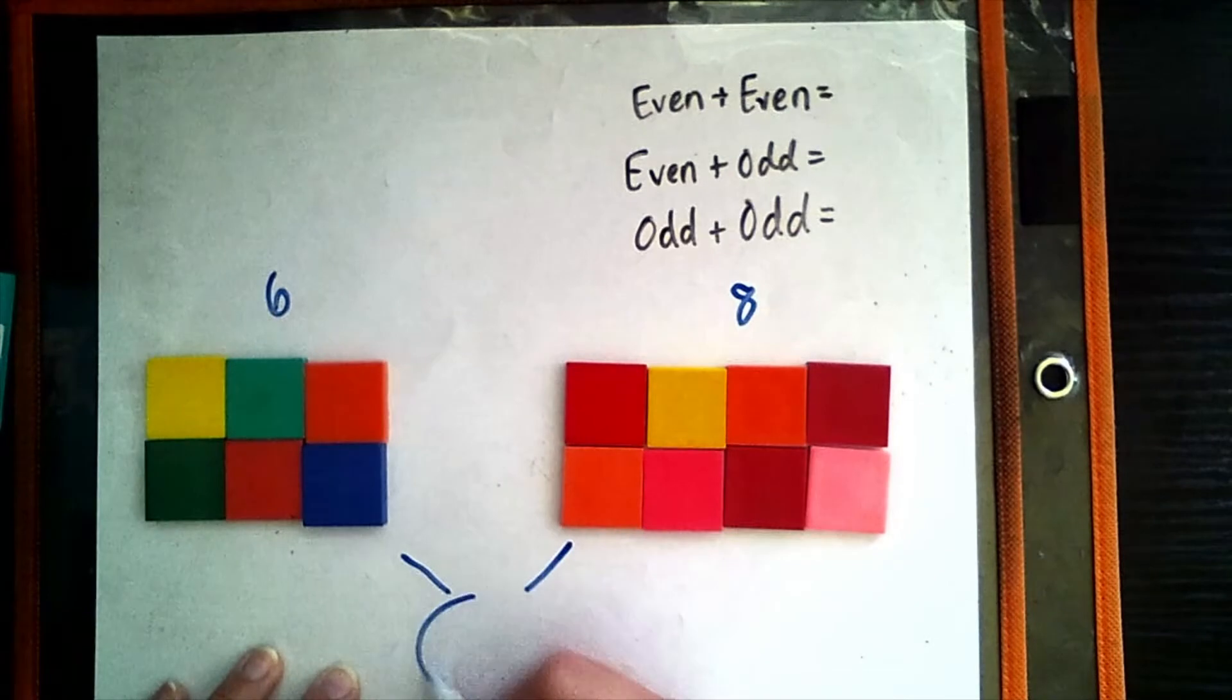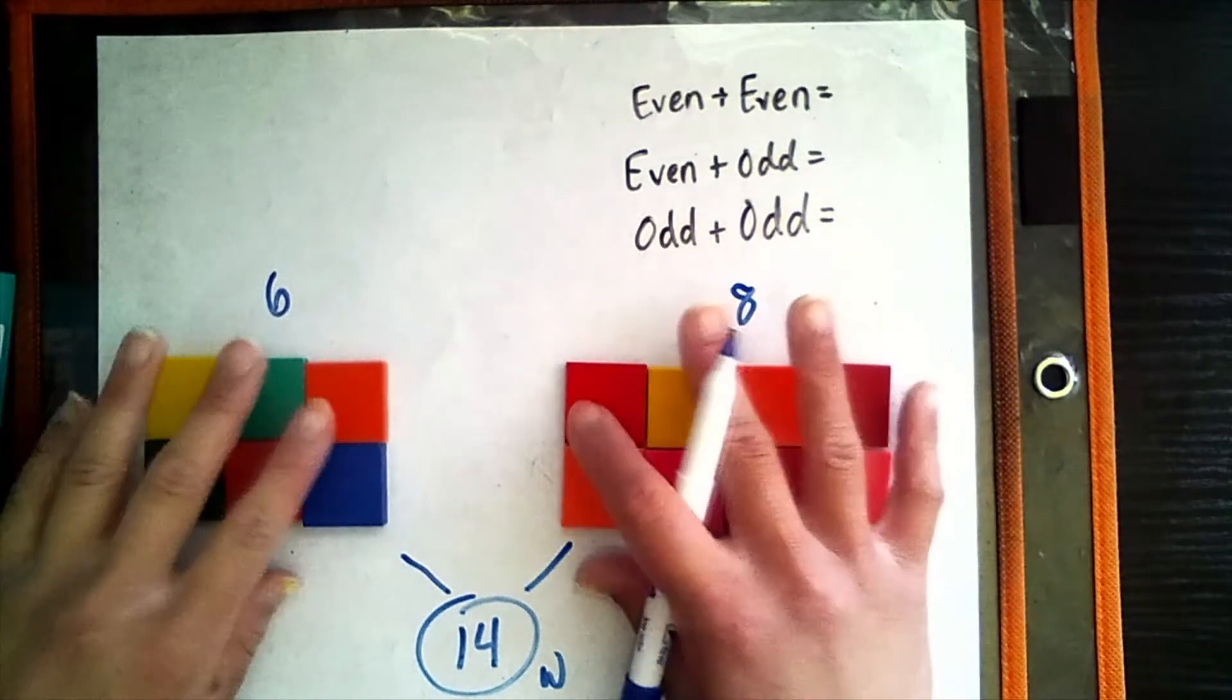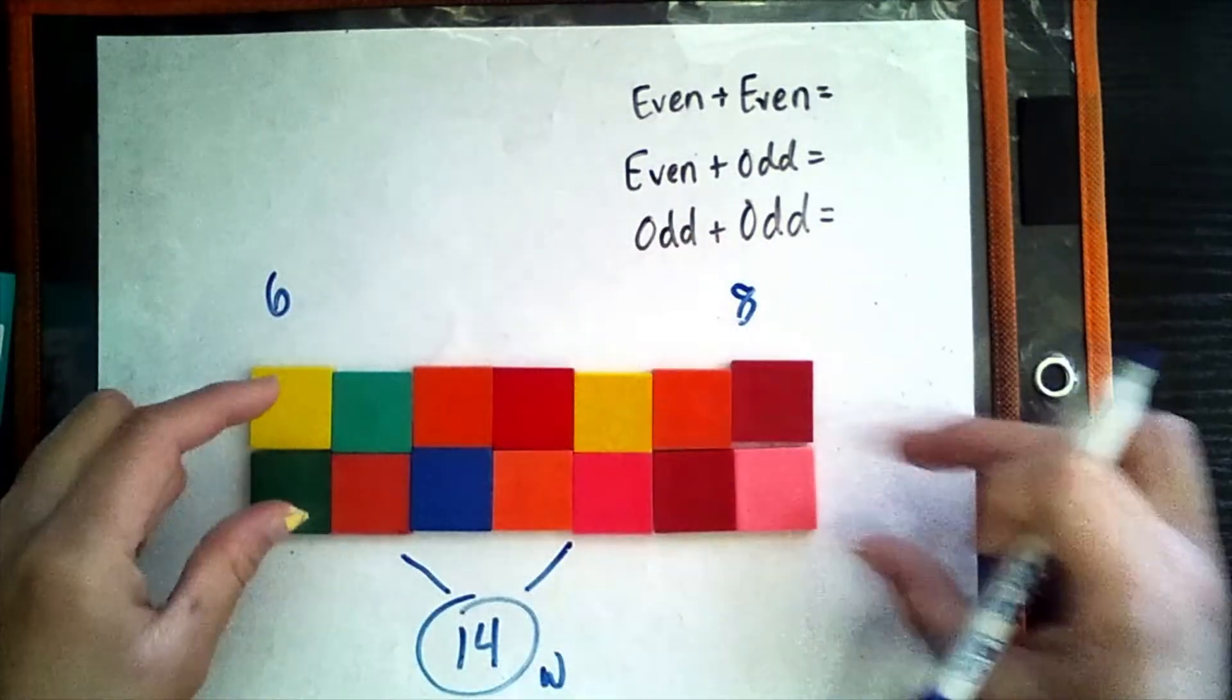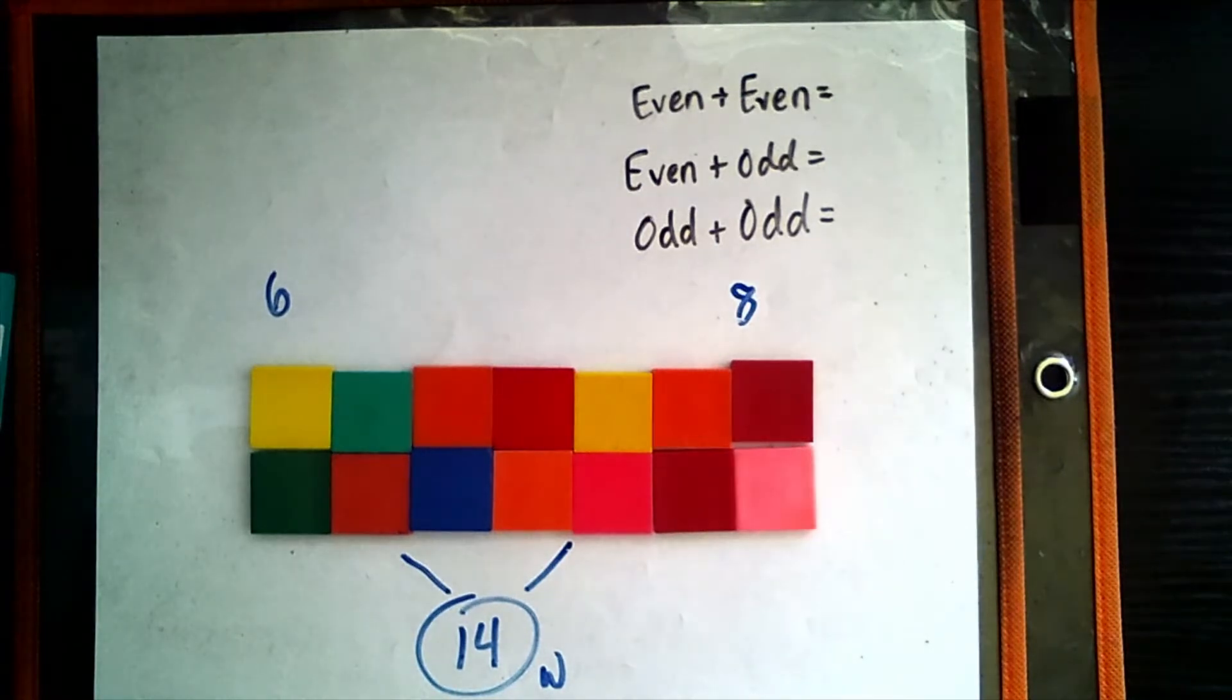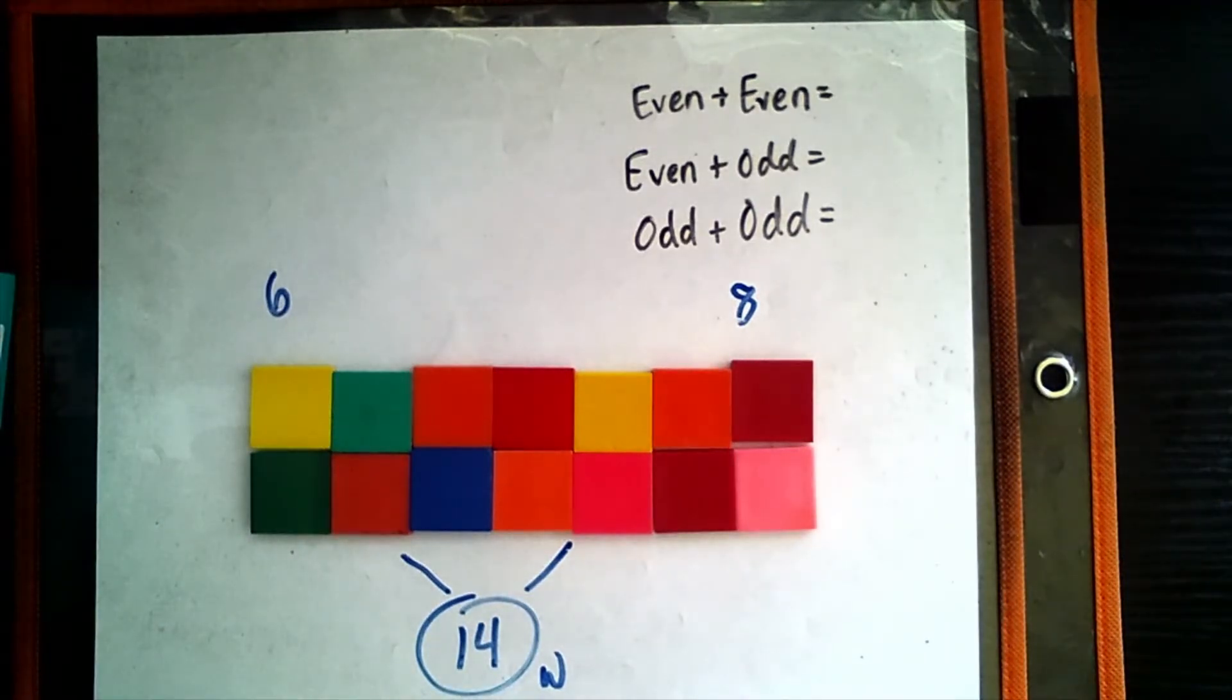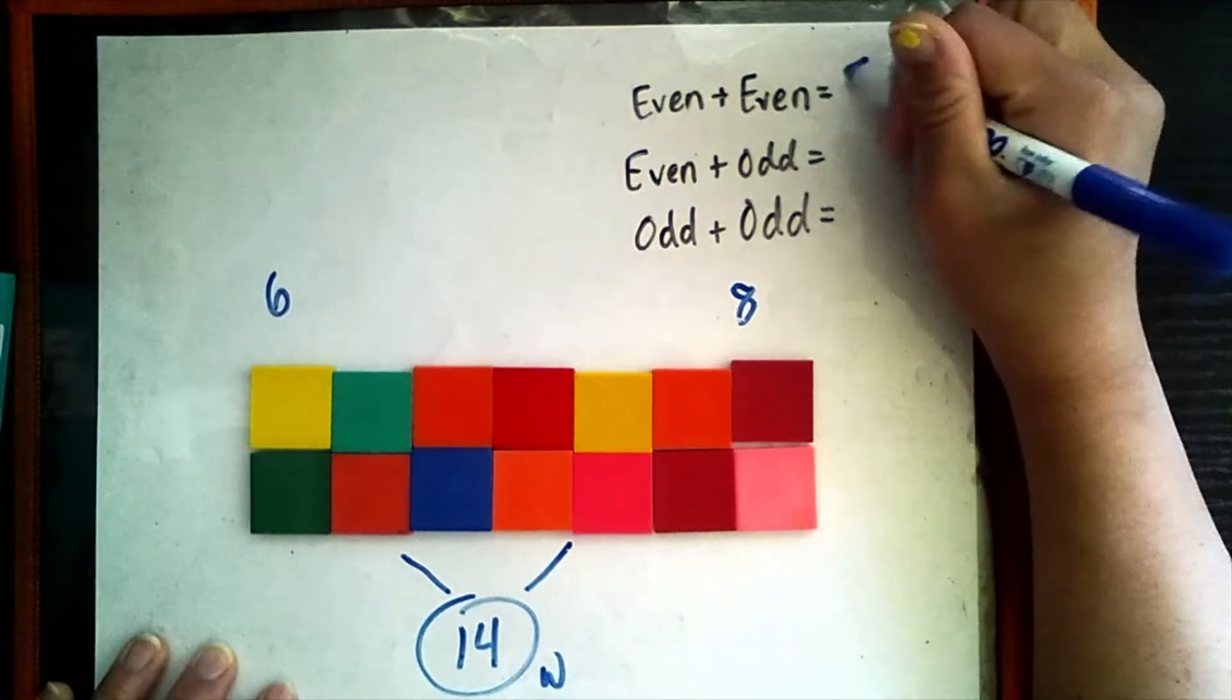Now, is that odd or even? Is 14 going to be odd or even? Wonderful. It's going to be even. And we know this because they would have the same amount in each row. And remember, we only look at even numbers through groups of two. Not anything more than that. So when we have 14 in two groups, it's the same amount in each group. Therefore, an even number plus an even number makes another even number.